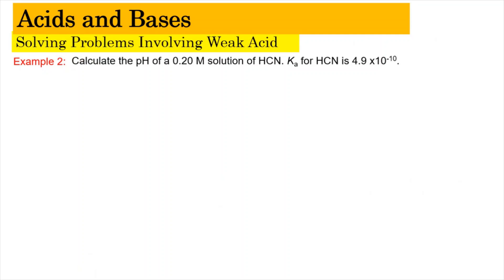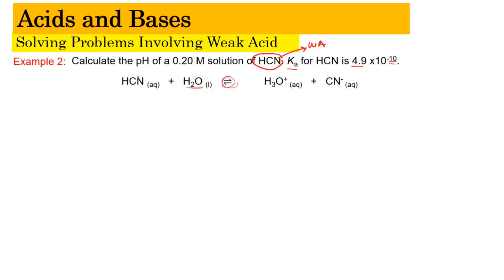Now for example number 2, we need to calculate the pH of a 0.20 M solution of HCN. The Ka value is given as 4.9 × 10^(-10), which is quite small. HCN is an example of a weak acid. The dissociation equation is HCN(aq) + H2O(l) ⇌ H3O⁺(aq) + CN⁻(aq). Since we need to find the pH, we need to find the concentration of H3O⁺, so we use the ICE table.